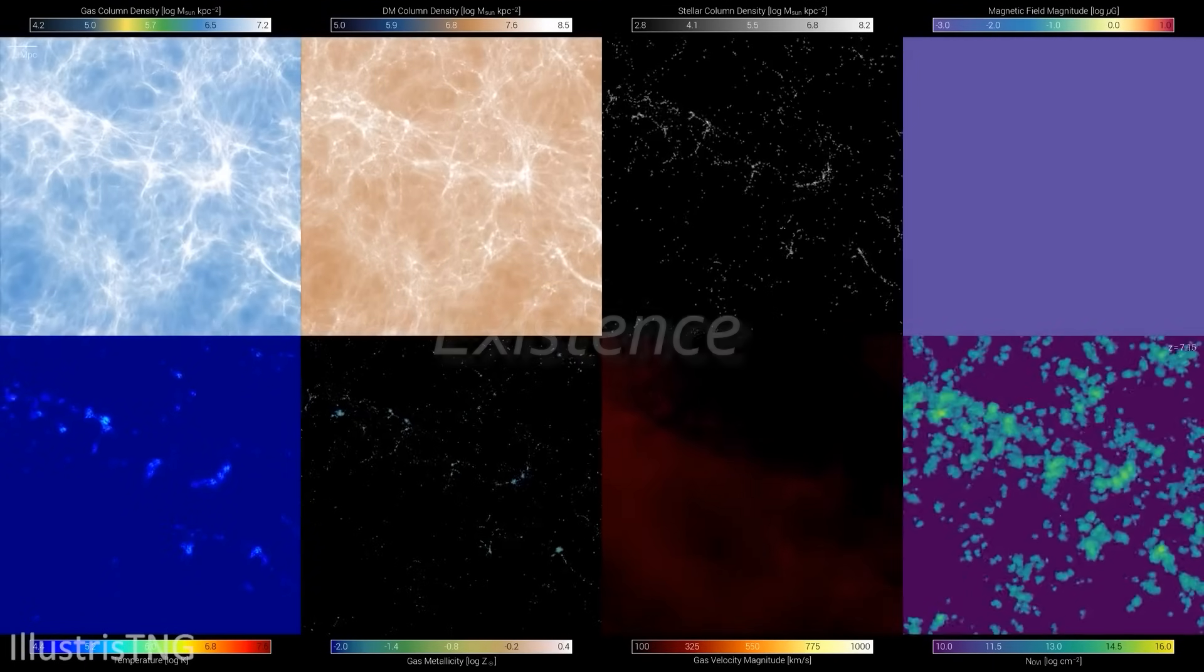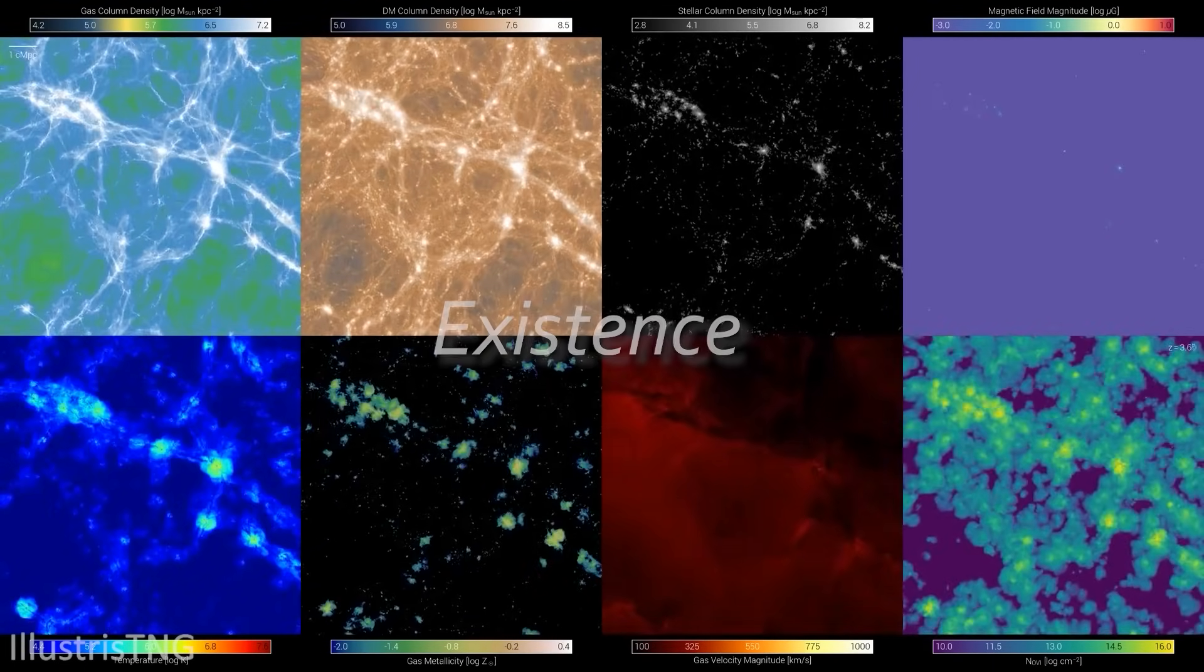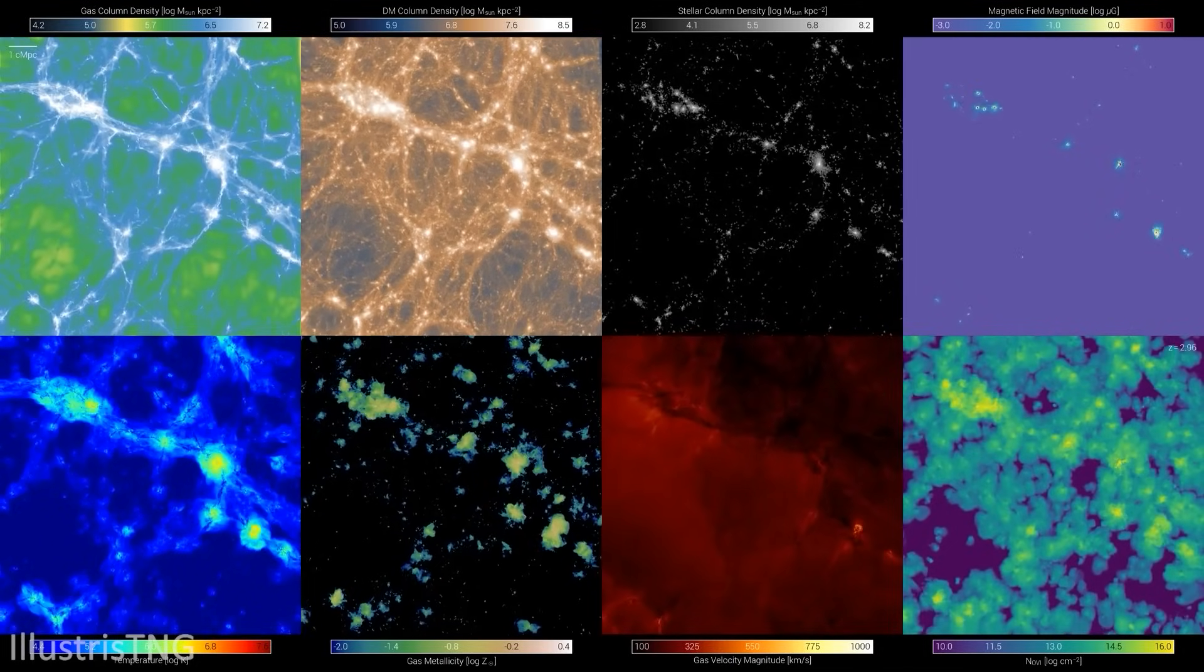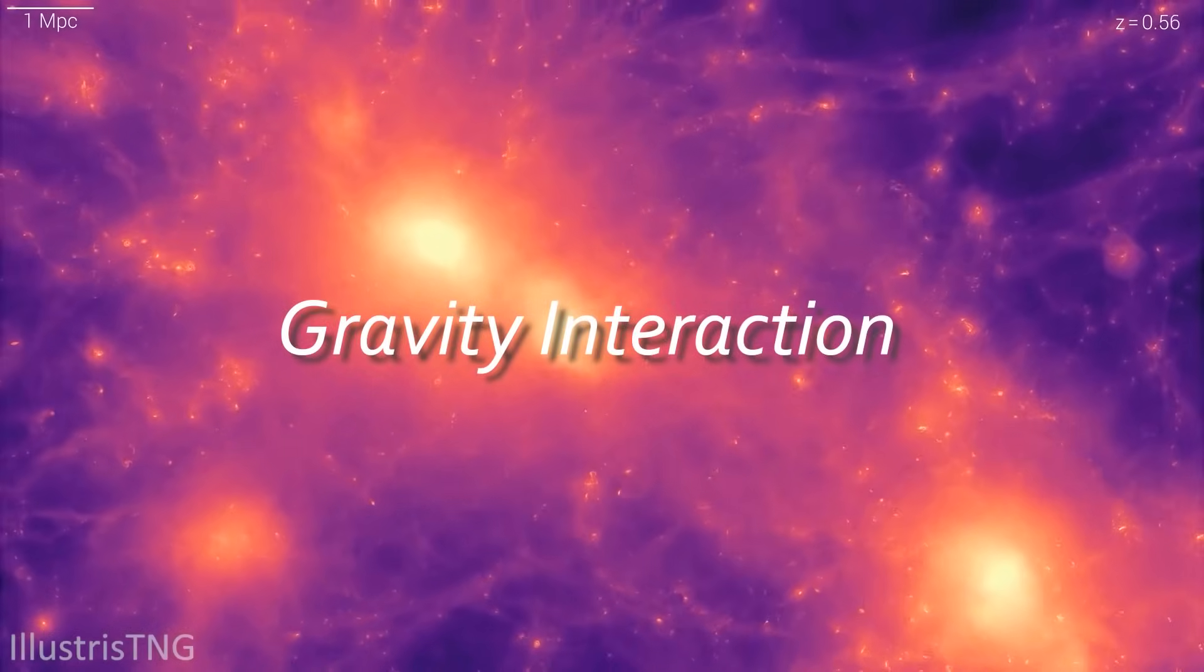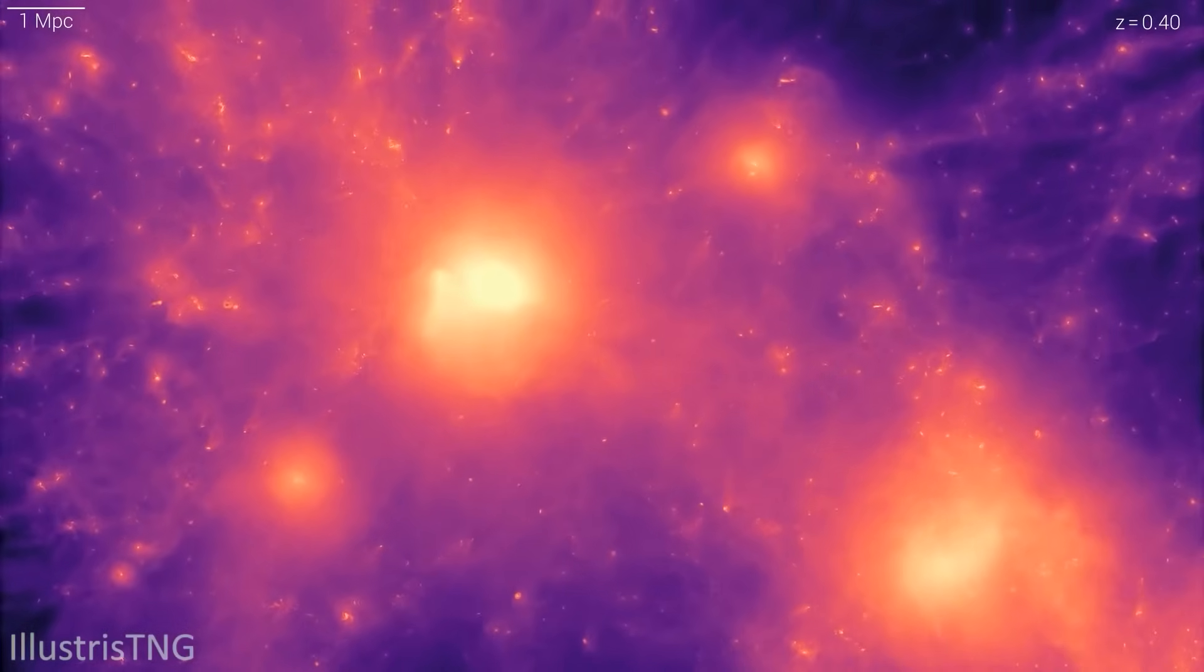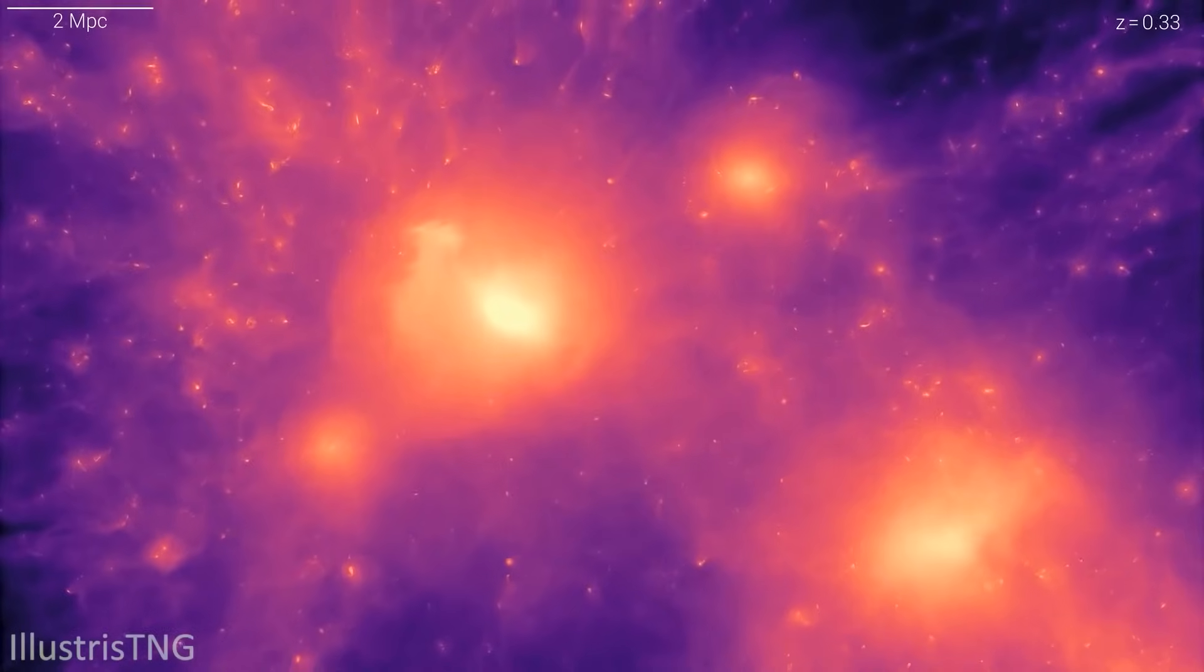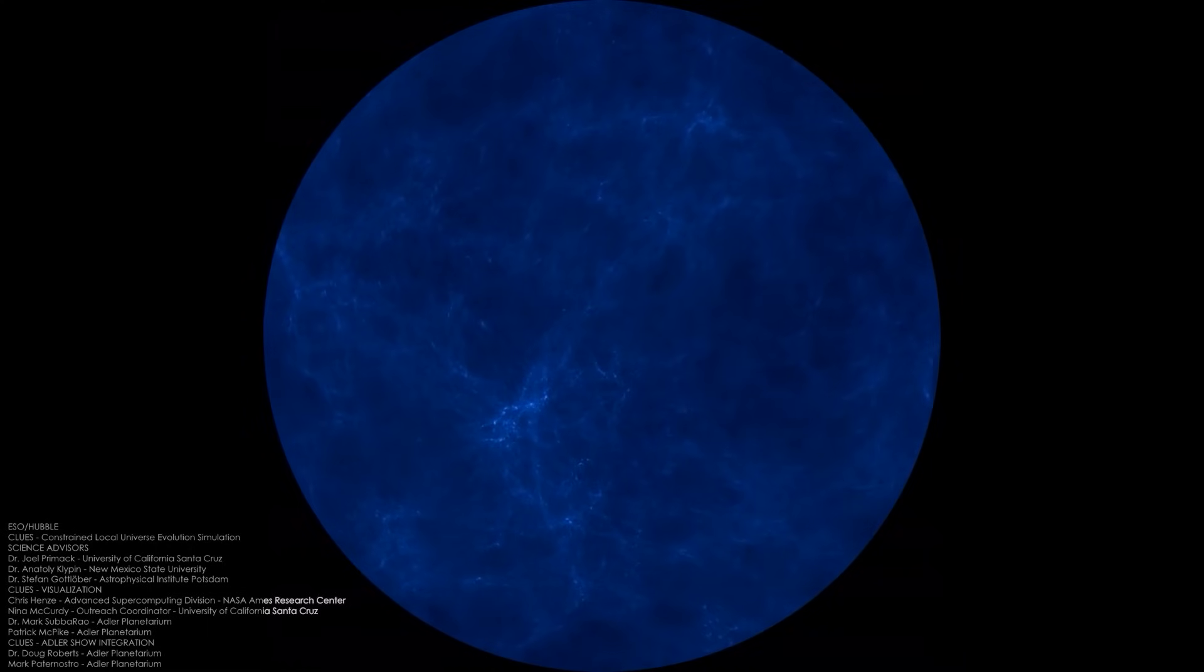In essence, there are three certainties: Existence – something unseen and mysterious exists in the universe, evident from its gravitational effects on visible matter. Gravity interaction – dark matter interacts with gravity, shaping the motion of galaxies and cosmic structures. Abundance – dark matter is abundant, far outweighing visible matter and constituting a significant part of the universe's mass.